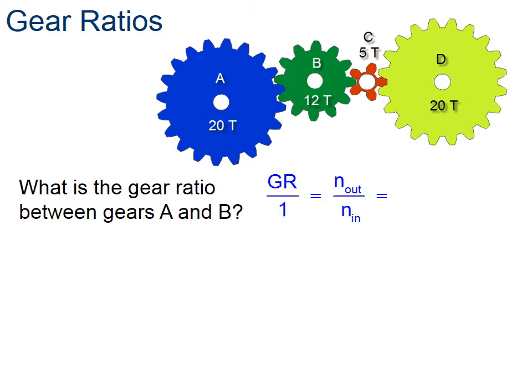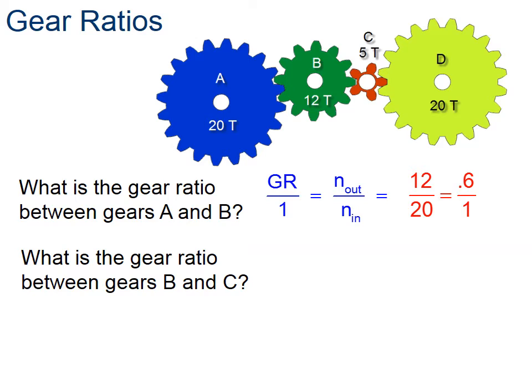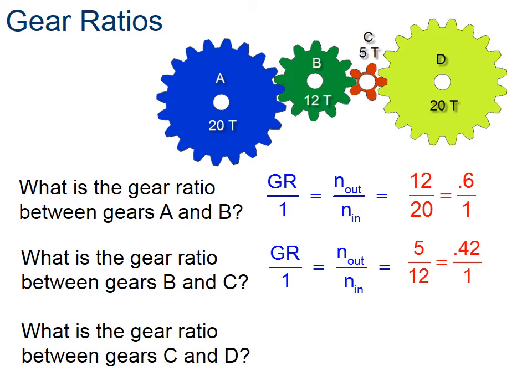So let's look at a different gear train. What we want to find out is what is the gear ratio for this total gear train from A to D. The way we do that is we take a look at the gear ratio from A to B first. From A to B, the number of teeth in the output gear, in this case B, that's 12, and the input gear has 20 teeth, so it's a 6 to 10 ratio. We do the same thing for B to C and get 5 to 12. Then we do the same thing for C to D and get 4 to 1.